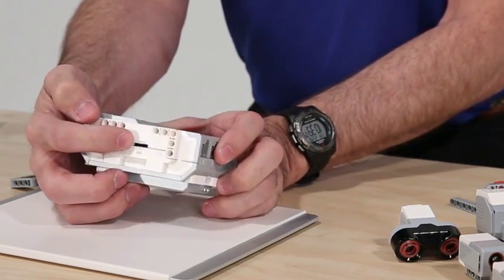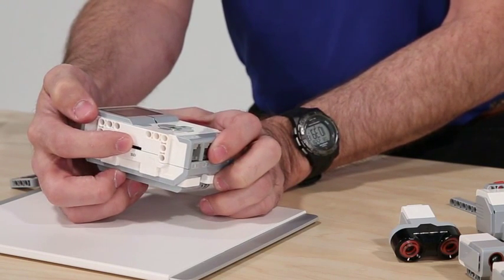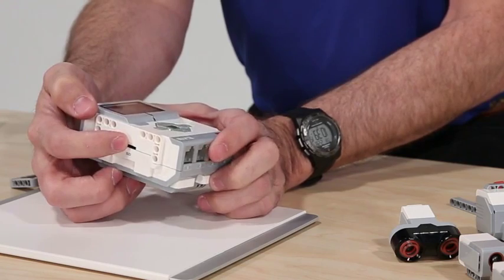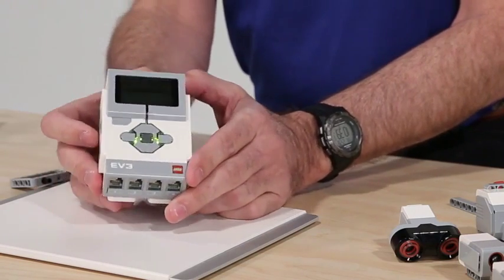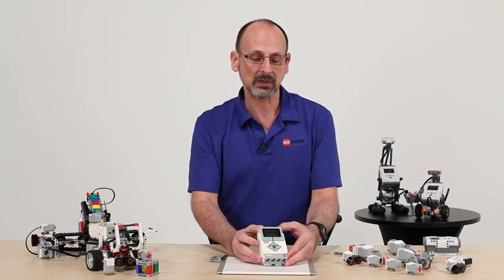We also see an SD card slot on this side that will accept SD micro cards that will enhance our memory options to up to 32 gig of memory so that we can add to the EV3 brick itself.